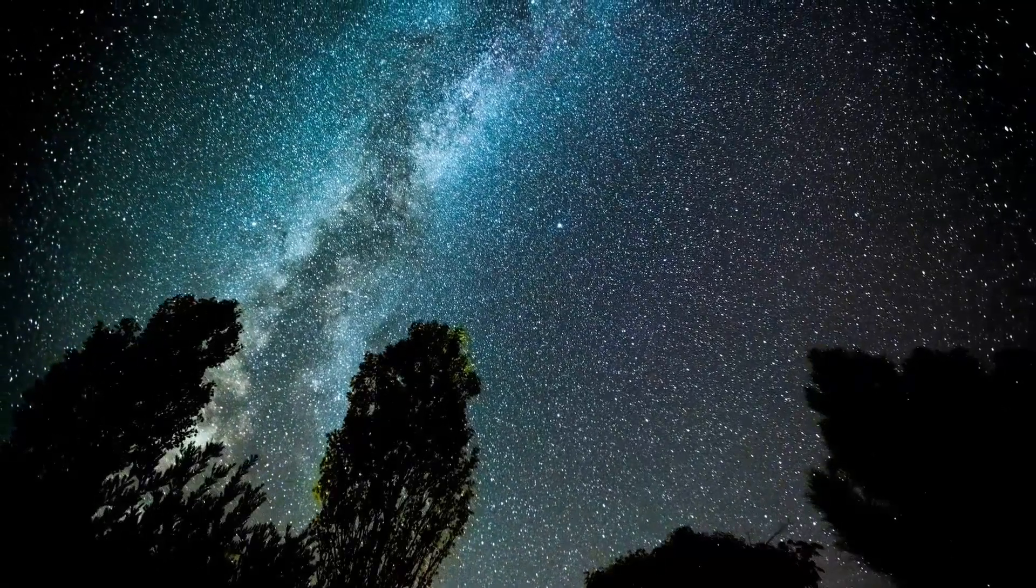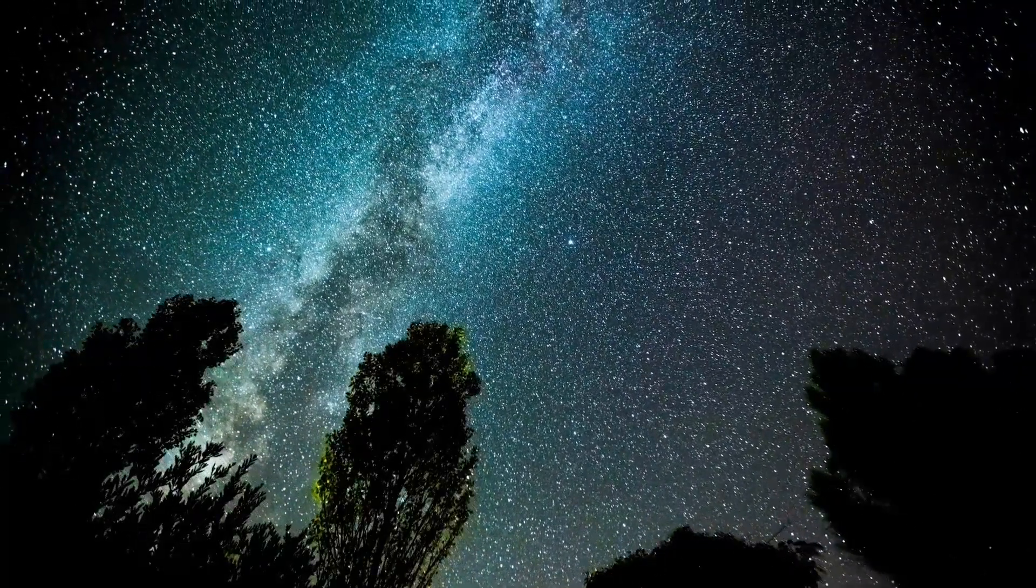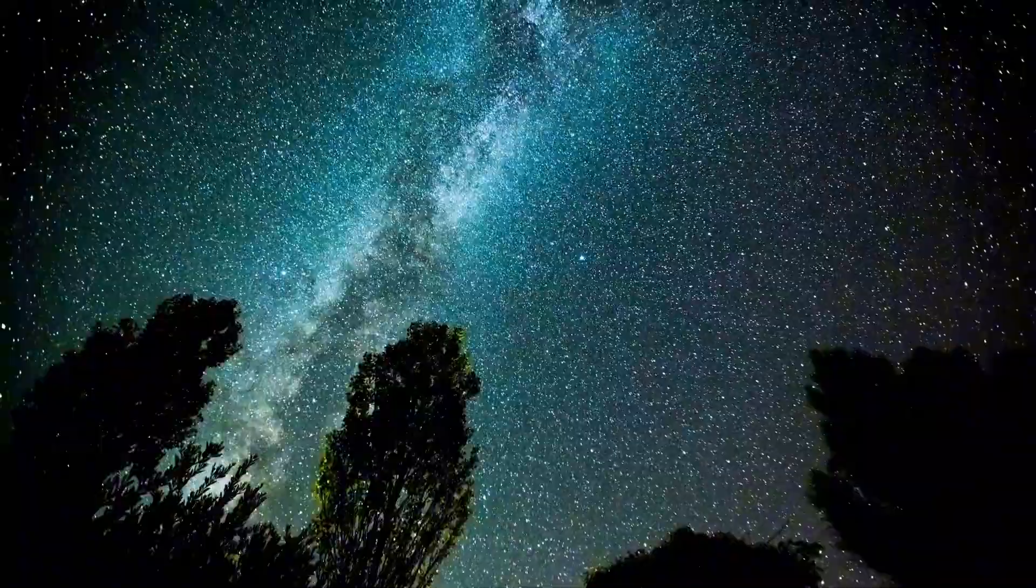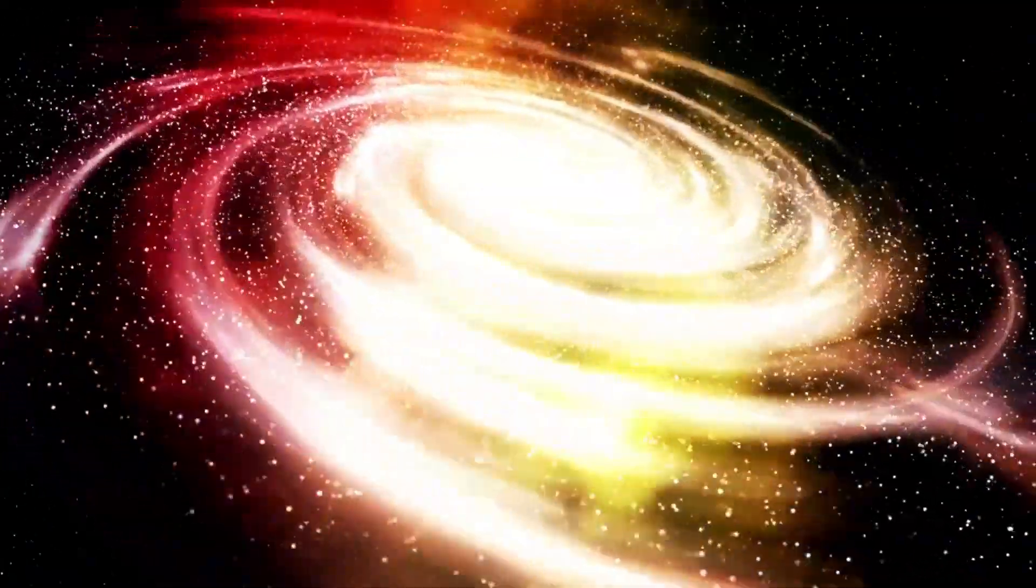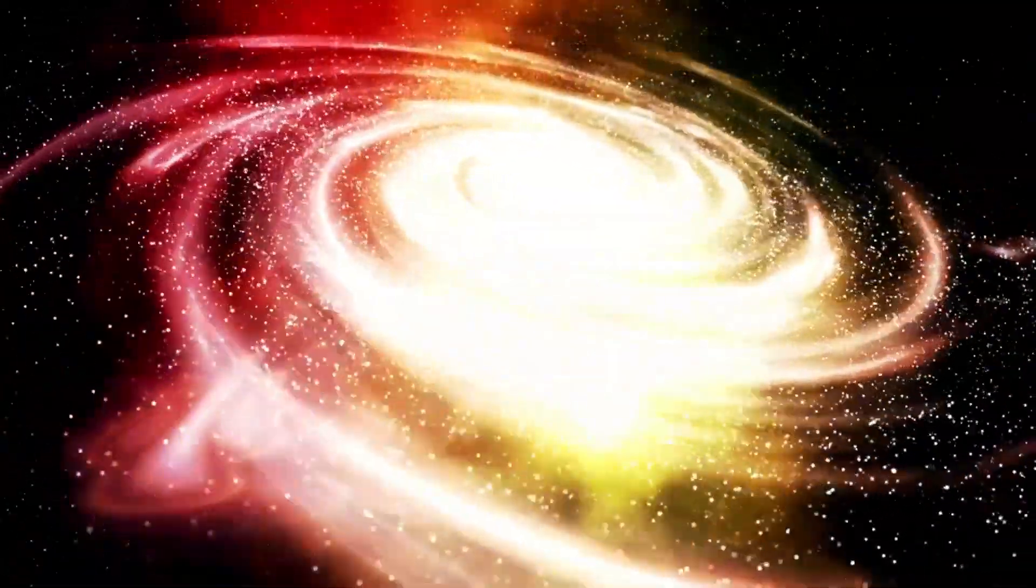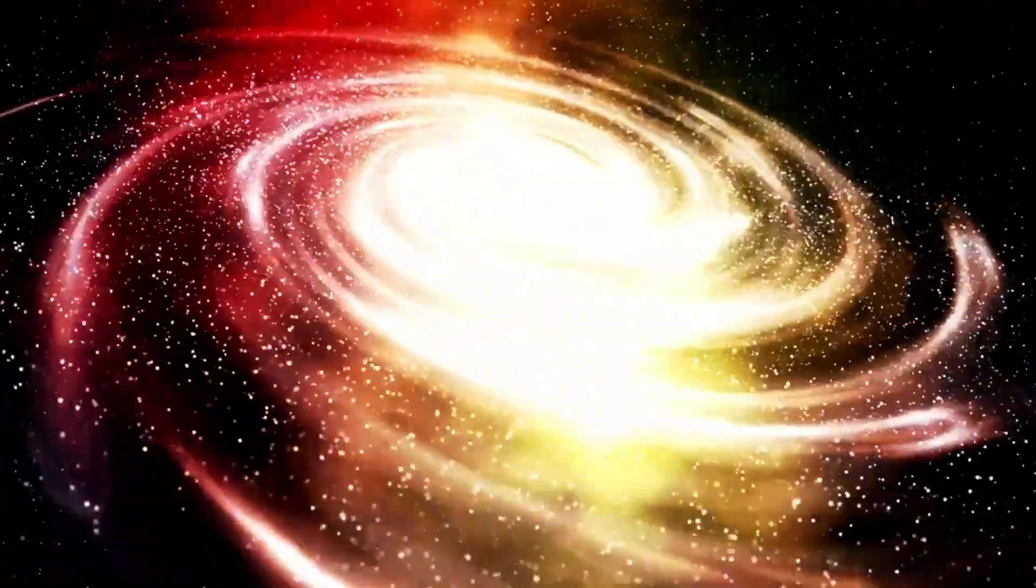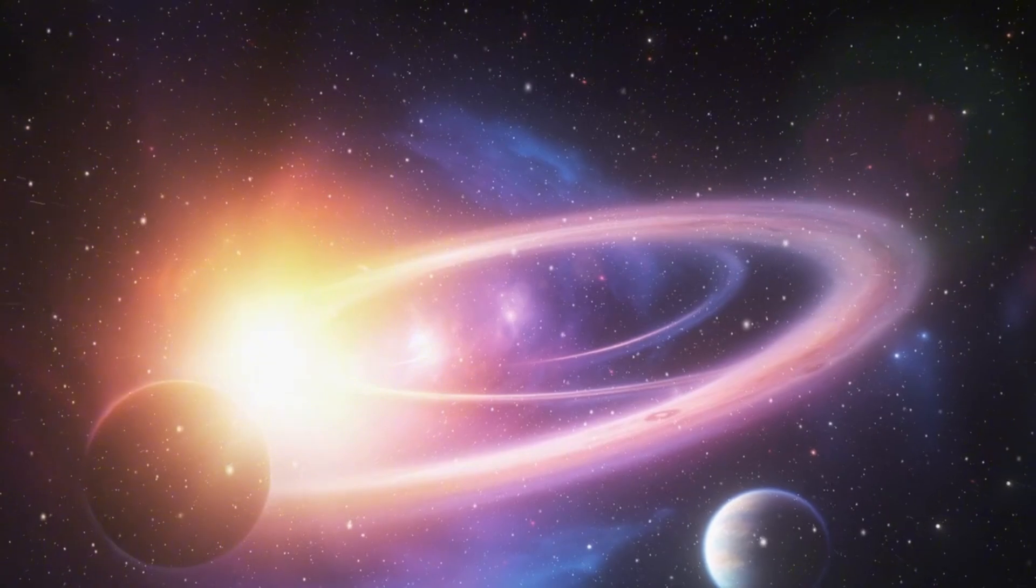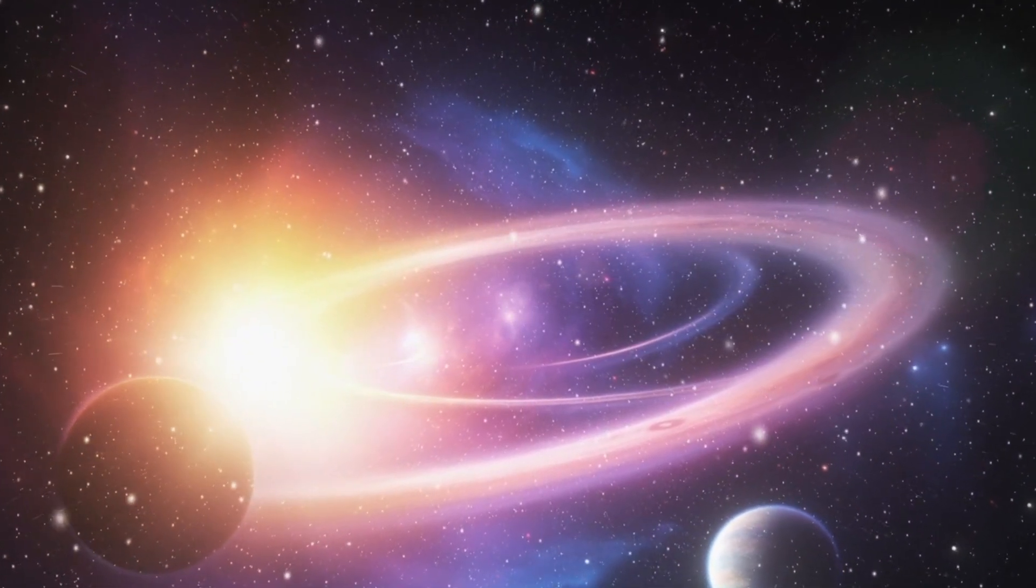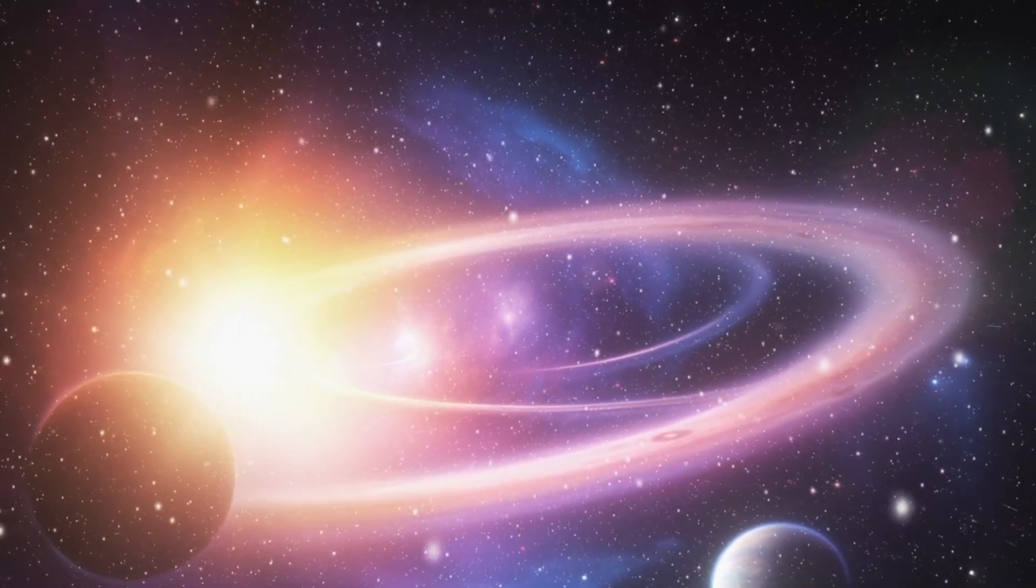Neutron stars, formed from the remnants of supernova explosions, possess densities so high that a sugar cube-sized amount of their material would weigh about a billion tons on Earth. Black holes, on the other hand, result from the collapse of the core of very massive stars and are regions in space where gravity is so strong that not even light can escape.